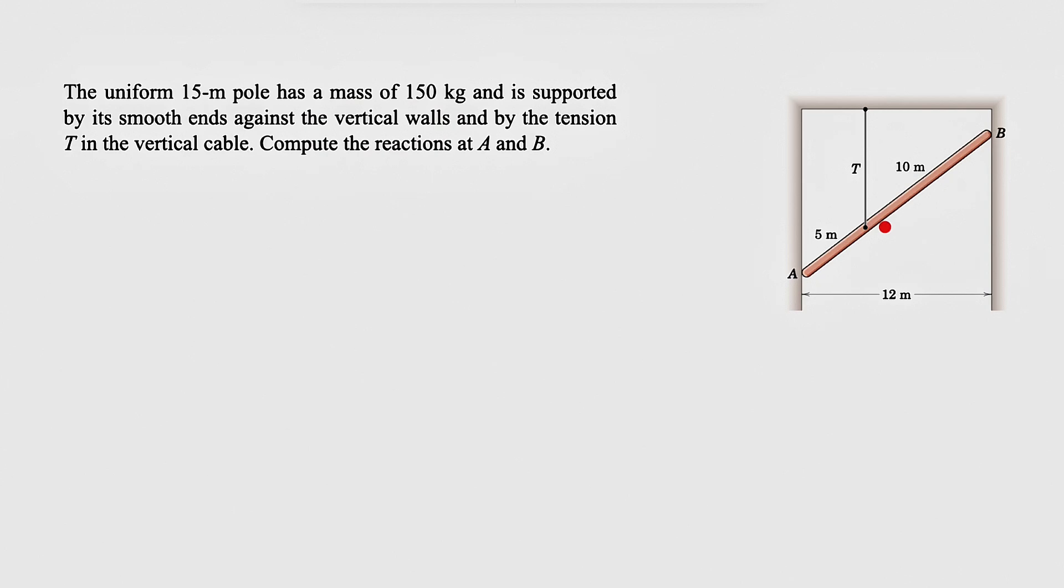So we're talking about these two points A and B. There is a vertical cable that is attached to this beam in here, and the tension in that cable is T. We need to compute the reactions at these two points A and B, which we know is smooth, so we don't consider any friction.